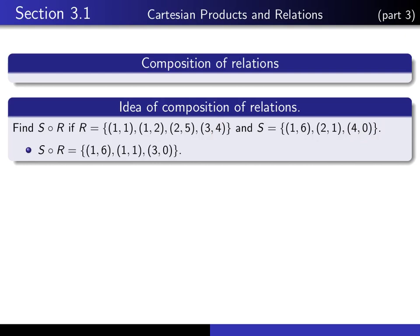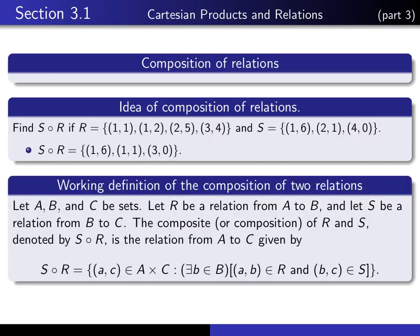Okay, so we can use that idea to write down the formal definition of the composition as follows. If A, B, and C are any three sets and R is a relation from A to B and S is a relation from B to C, then we can always form the composition of R with S. We denote it in this way. This is the composition of R with S. And it's a relation from A to C given by the following: it's the set of all ordered pairs (a,c) in A cross C with the property that there exists this linking element b of B. It has the property that (a,b) is in R and (b,c) is in S.